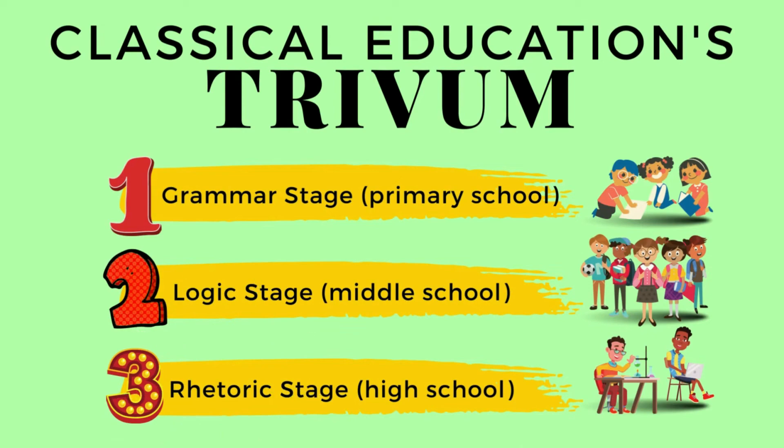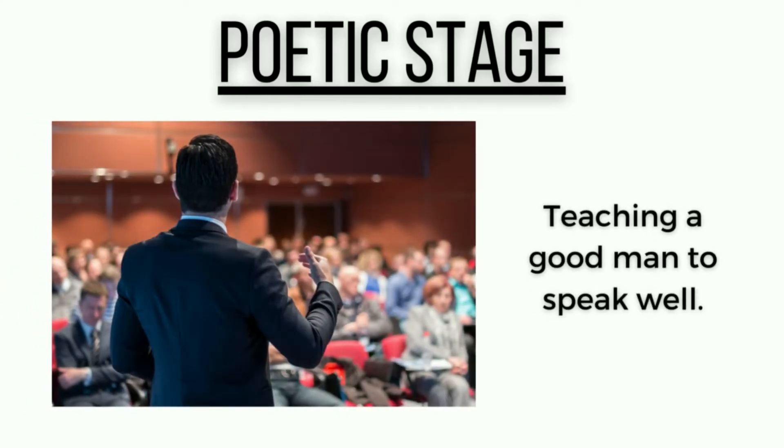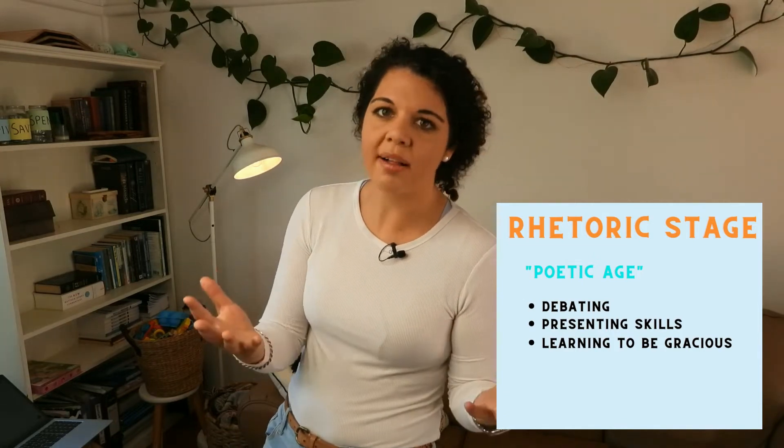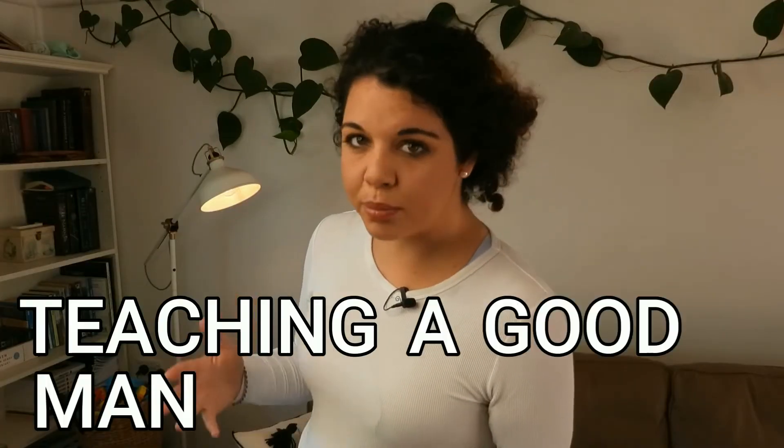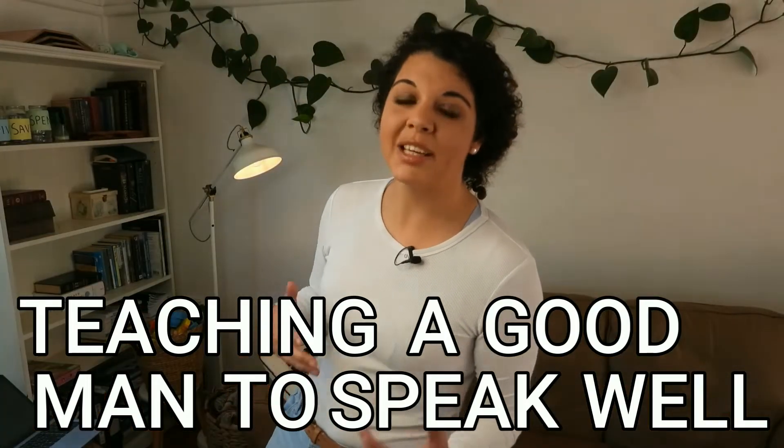The third stage is the rhetoric stage. Dorothy Sayers called this the 'poetic stage' — children want to present themselves in a winsome manner but sometimes don't know how to do it and it can come out awkwardly. Here we teach them to present themselves persuasively. This is also a reason a lot of classical schools produce many of the politicians of our day, because they know how to present themselves well. But as educators we want to teach them to present themselves with wisdom and poise. Quintilian, a famous rhetorician in Roman times, described this stage as teaching a good man to speak well. We continue debate in this stage and show them how to use wisdom in their speech, talking for the listener's benefit so the listener comes away with something they can grasp.